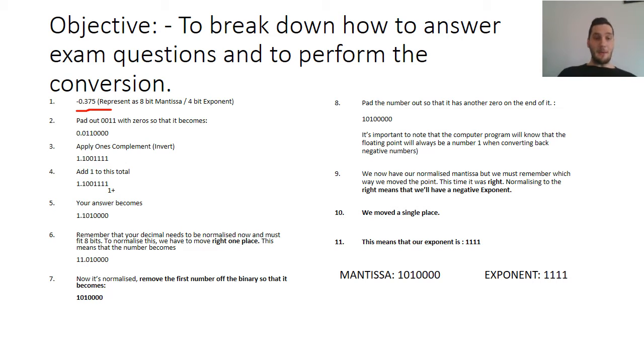So you've worked out what 0.375 is. You pad it out with zeros, as shown here. Then you apply one's complement to it. So that means you invert all of the ones to become zeros and all the zeros to become one. So notice the difference between two and three. Now, you add one to the total, which is what I've done here. So your answer would become 1.1010000.